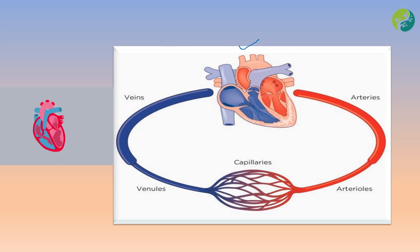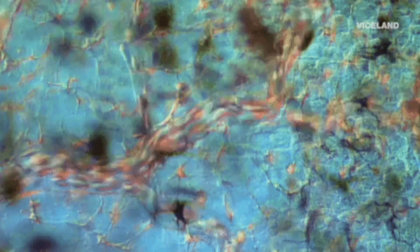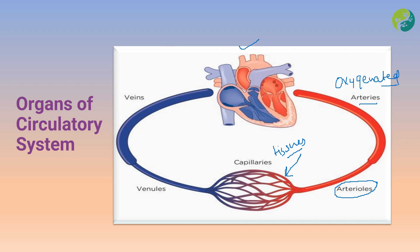The heart pumps blood across the body. First, blood travels through the arteries, which carry oxygenated blood. Arteries further divide into arterioles that carry oxygenated blood towards the capillaries. Capillaries are the narrowest vessels, carrying oxygenated blood to the tissues where all tissues receive oxygen and nutrients, utilize them, and the blood is then converted into deoxygenated blood. This deoxygenated blood is supplied to venules, which carry it towards the veins.